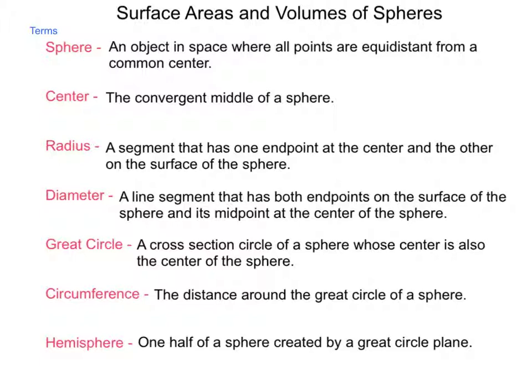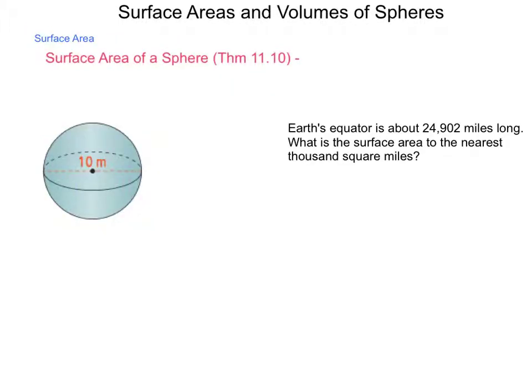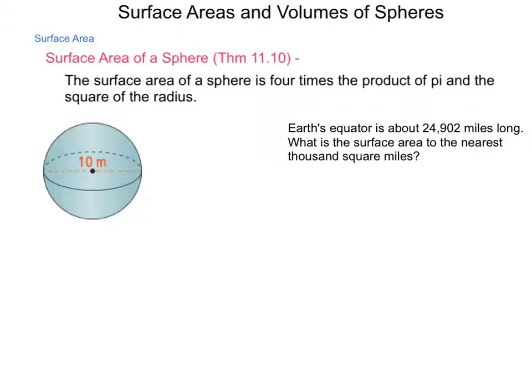With all these terms and definitions in mind, let's start looking at theorems and ideas that come up in regards to surface area and volume of these spheres. First up, we're going to have surface area of a sphere. This is theorem 11.10, and it reads, the surface area of a sphere is four times the product of pi and the square of the radius. So, what this means, if we were to find the area of the great circle created by that bisecting plane and then multiply that by four, we would have the surface area of the sphere as a whole.